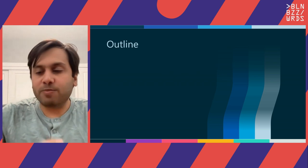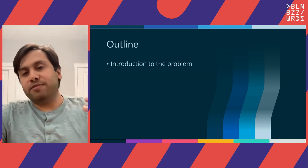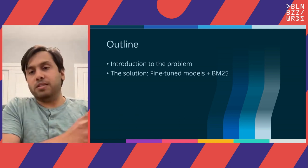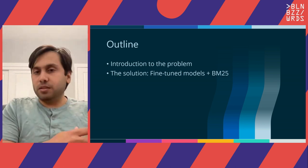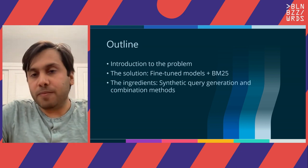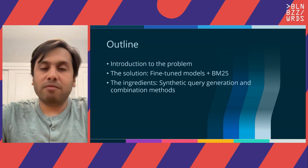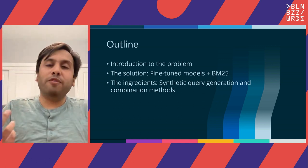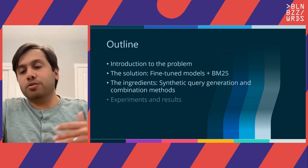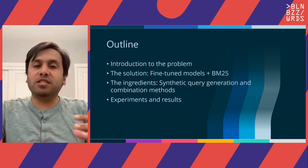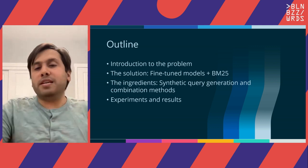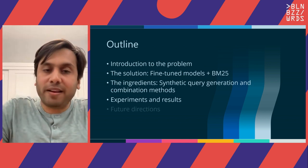The outline of the talk is split into five different parts. The first part is a precise formulation of what the problem is. The second part is what I think is the solution: fine-tuned models, small fine-tuned models combined with BM25. Building the solution requires two key ingredients: synthetic query generation, which allows us to build fine-tuned models, and combination methods for how we combine them with BM25. This leads to experiments and results, evaluating different combination methods, and finally I'll conclude with future directions.